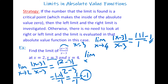Now the limit as x goes to 3 of |x − 3| / (x − 3). Here we have to look at the limit from the left and from the right. When x approaches 3 from the right, the number is a little bit bigger than 3, so the inside of the absolute value is positive, and the term comes out as it is.